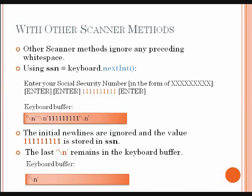Other scanner methods ignore any preceding whitespace. Using SSN equals keyboard dot nextInt, one may enter their social security number after pressing the enter key as many times as they wish. The keyboard buffer will read each press of the enter key as a newline character. These newline characters will be followed by the user-entered numerical data, followed by another newline character when the user presses enter. The initial newlines are ignored and the value entered by the user is stored in SSN. The last newline character remains in the keyboard buffer.